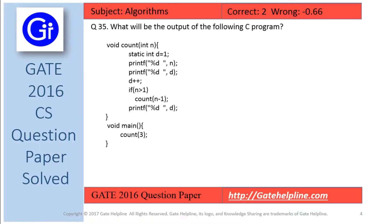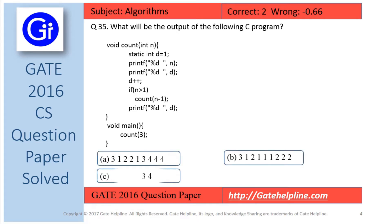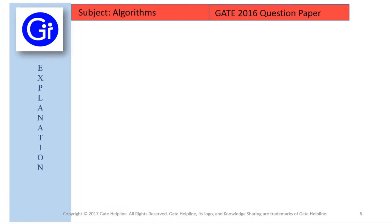Question number 35 asks: what will be the output of the following C program? The options are A, B, C and D. Now we will see the explanation to this question.